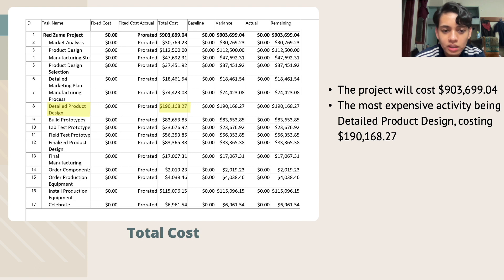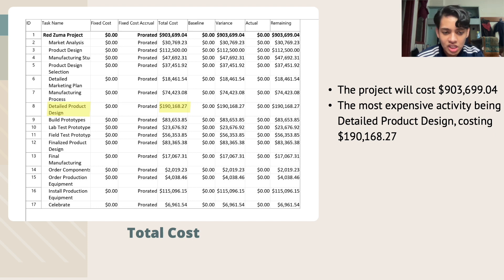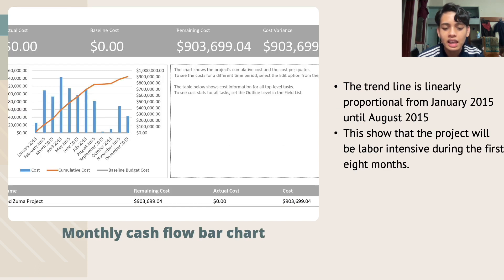The total cost of the Red Zuma project is $903,699. The most expensive activity, highlighted in yellow, is the detail product design, costing $190,168. Next, the monthly cash flow is illustrated using bar charts.